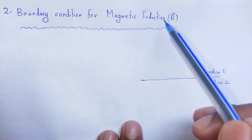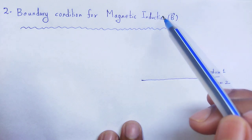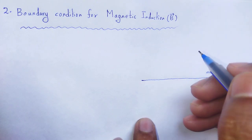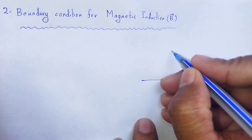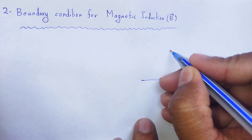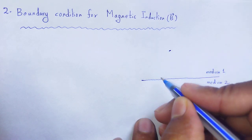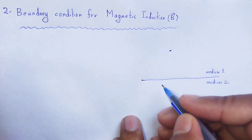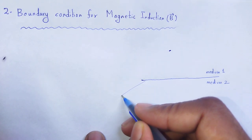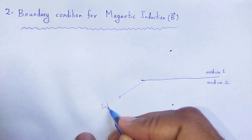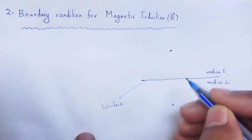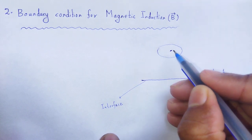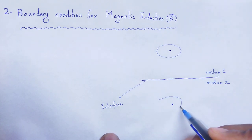To apply Maxwell's second equation — divergence of magnetic field equal to 0 — we construct a Gaussian surface. We identify a point in medium 1, a point in medium 2, and the interface between them, then construct a Gaussian surface just like a pillbox.